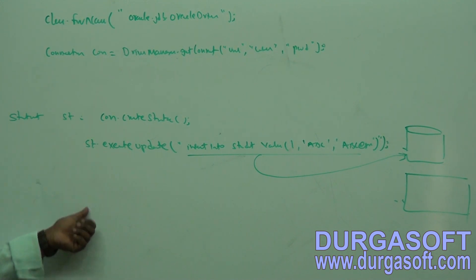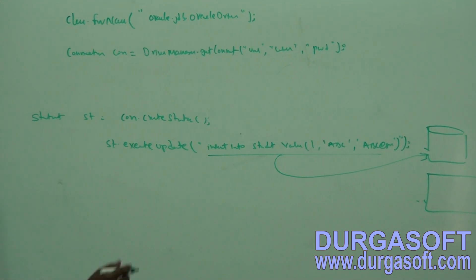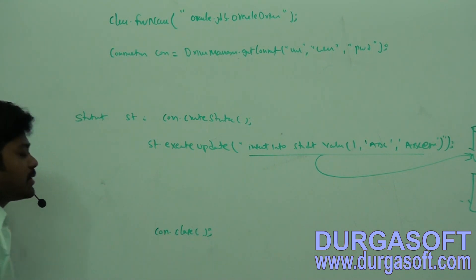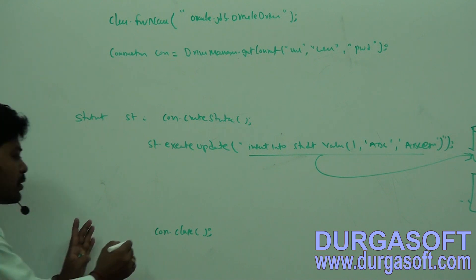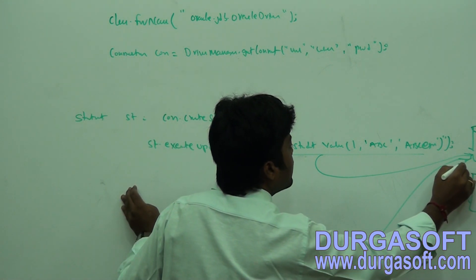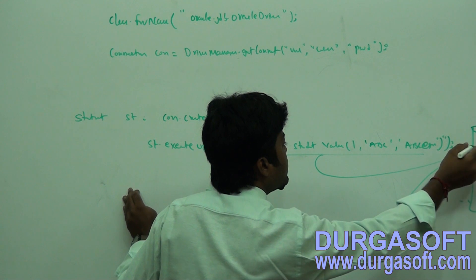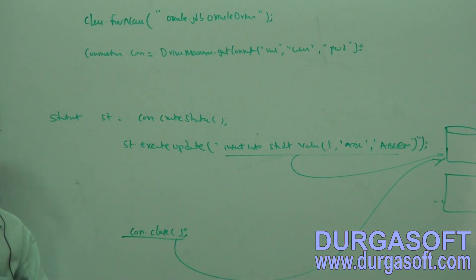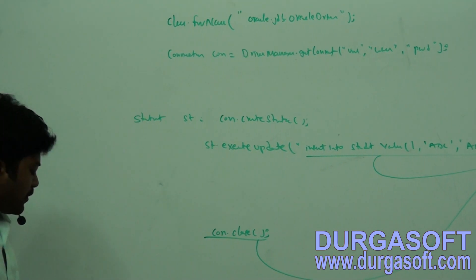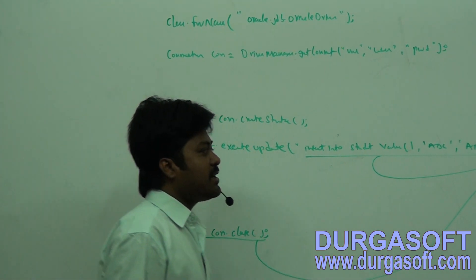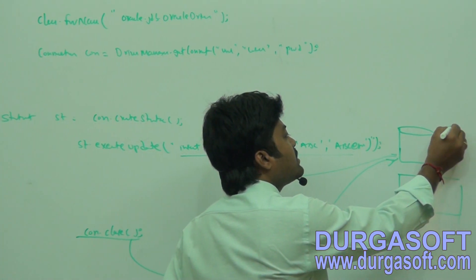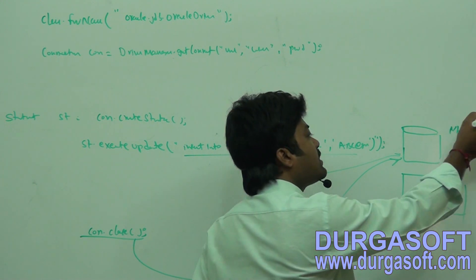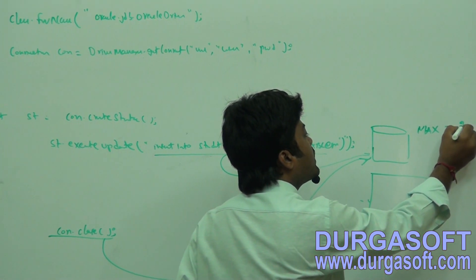Once after completion of your code, in the finally block you need to call connection.close(). Once you call this method, it will close this socket — it will request your database to close the socket, then the same socket can be made available to other users. Every database will provide a maximum number of connections; for example, max connections may be 20.